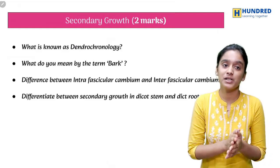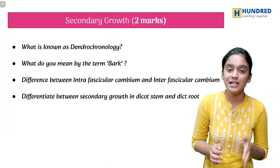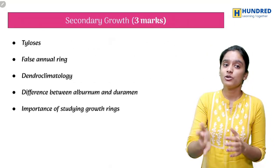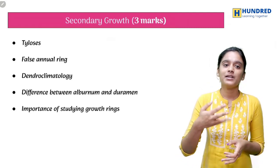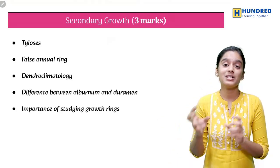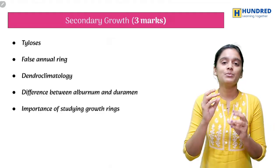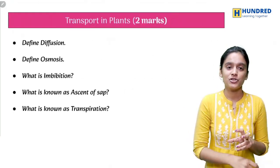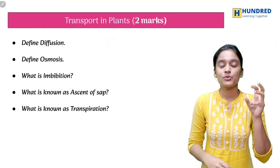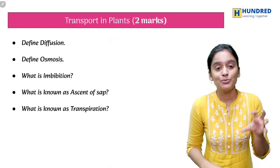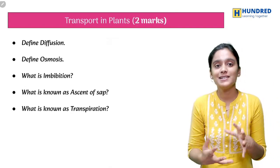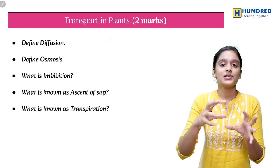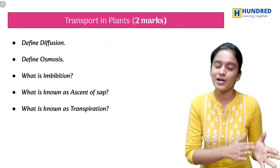In Chapter 10, Secondary Growth, which is a very small chapter, the important 2-mark questions are: Dendrochronology, Dendroclimatology, Tylosis, False Annual Ring, the difference between Alburnum and Duramen, Sapwood and Heartwood, and the importance of growth rings. First concentrate on these 5 to 6 questions.